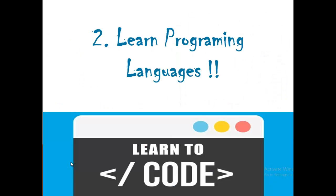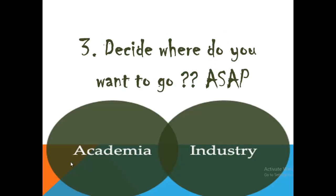Secondly, learn programming languages. If you are a computer science student and you want to be good at it, you have to learn some programming language — maybe at the beginner's or intermediate level, not necessarily at the expert level, but you will have to learn how to code. There are desktop application and web programming languages available. Programming languages are the core of computer science, so learn to code.